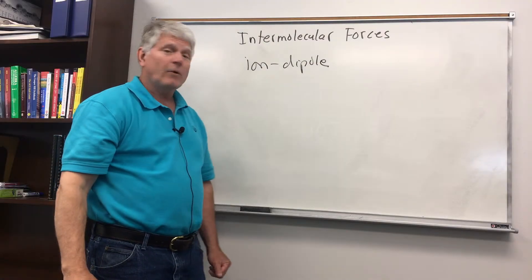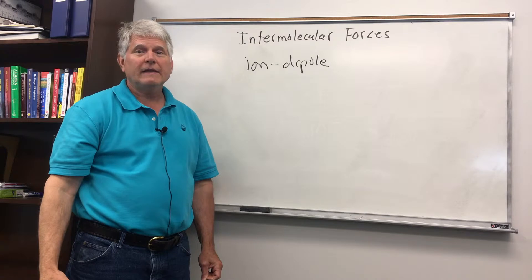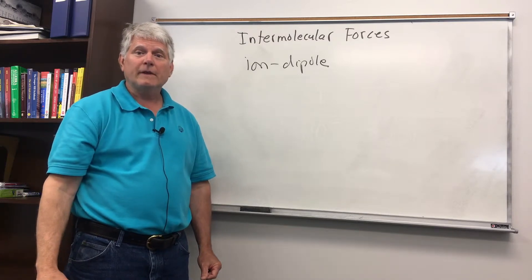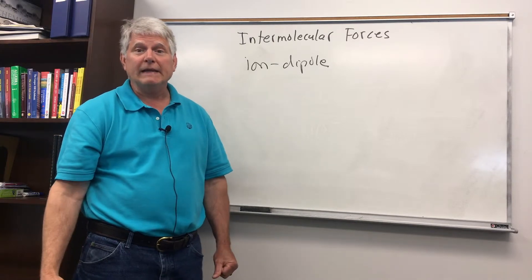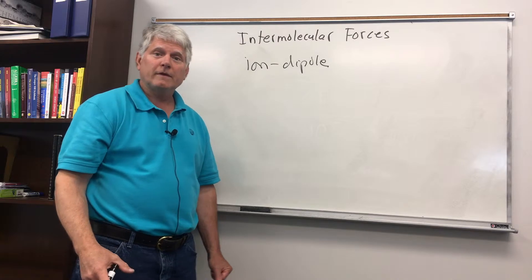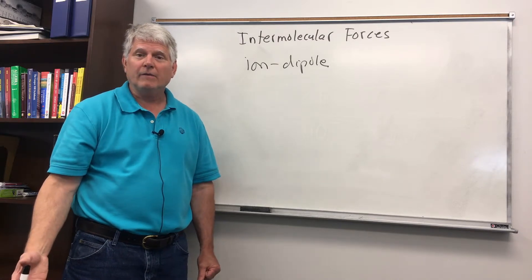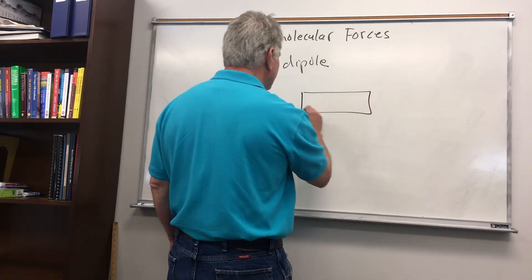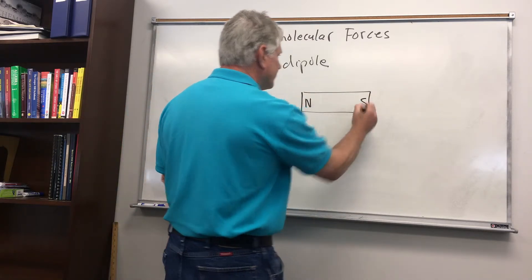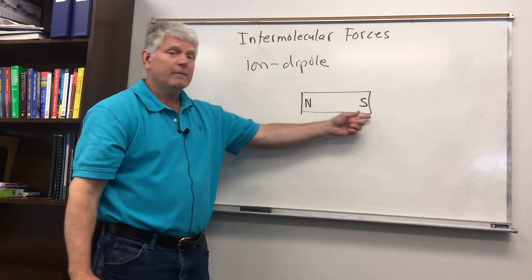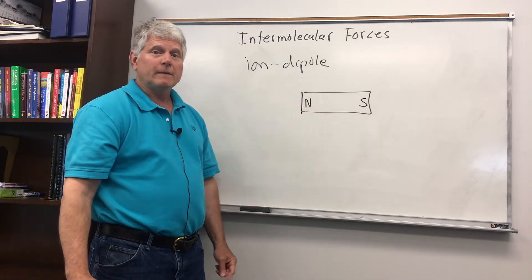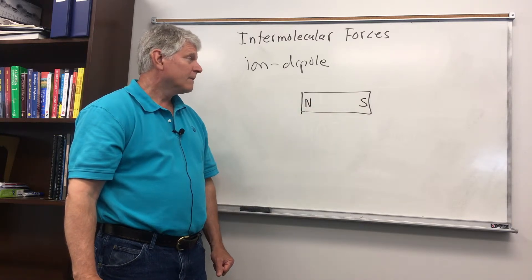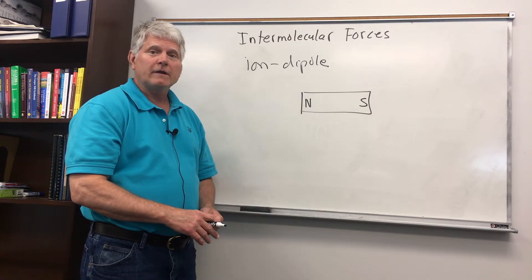Now let's consider ion-dipole interactions. To understand these, we need to understand what a dipole is. A dipole is just a separation of charge. You are familiar with a magnetic dipole — the north and south end of a bar magnet. If you have a magnet, you have the north pole and the south end, and this is a magnetic dipole: a separation of the poles of the magnetic field. You can have the same thing for an electric field.